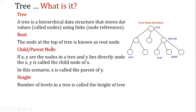The child and parent node: if x and y are nodes in a tree, and y lies directly under x, then y is called the child node of x. In this case, x is called the parent of y.